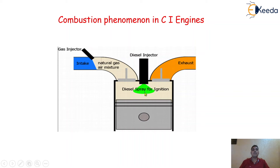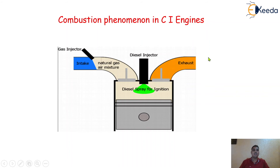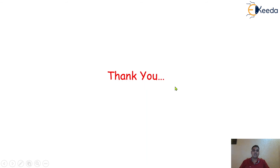In this case, the process of combustion takes place at the end of the compression stroke. As soon as the diesel injector sprays the amount of diesel inside the combustion chamber, the process of combustion starts to take place in the case of CI engines. I hope you understood the combustion phenomena and how it takes place in the case of CI engines. Thank you so much for watching this video.